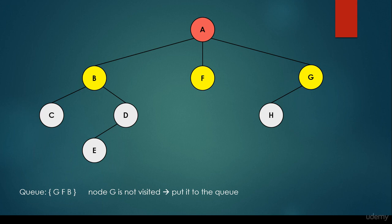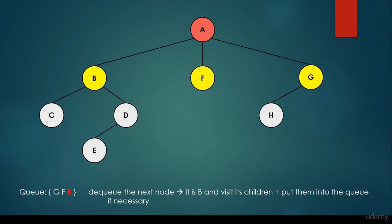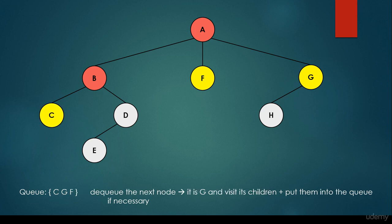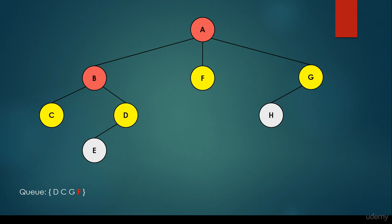The queue is a FIFO structure, so the first item inserted is the first one taken out. B was inserted first, so we dequeue it and visit all its children, adding them to the queue if we haven't visited them yet. We consider B's children C and D and add them to the queue. Next we dequeue F and visit it — F is a leaf node with no children, so nothing is enqueued.